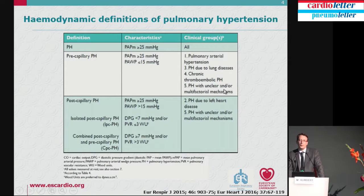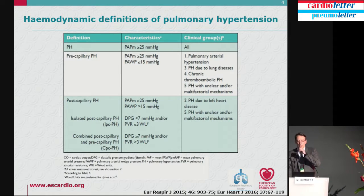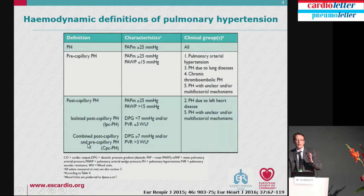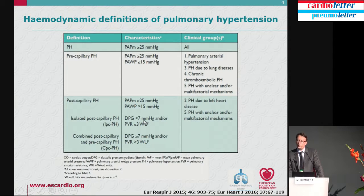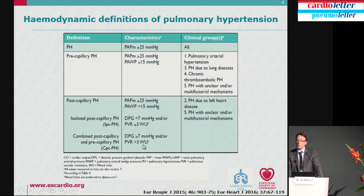Post-capillary pulmonary hypertension is very, very common, defined by a mean PAP above 25 and a wedge above 15. We have discussed with our cardiology colleagues how to better define patients with real passive isolated post-capillary PH versus those with a pre-capillary flavor. Right now, isolated post-capillary PH is defined as PVR below 3 wood units and diastolic pulmonary gradient below 7 mmHg. When these parameters are outside this range, you have combined post- and pre-capillary pulmonary hypertension.